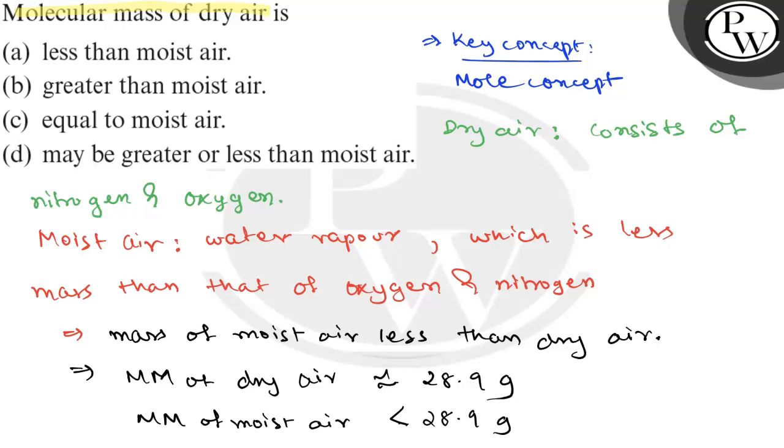Therefore, what we can conclude? The conclusion we can make from this is the answer would be the molecular mass of dry air is greater than moist air. That is given in our option number B: greater than moist air.